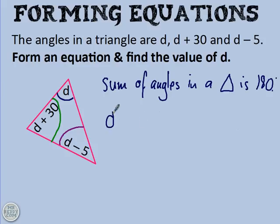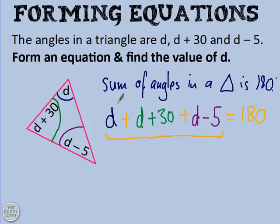So if I add the angles together, is that what you're saying? The first angle, D. Add the green angle, which was D add 30. Add the purple angle, which was D take away 5. Are we saying that that equals 180? I think we are. Because this is the three angles added together. In other words, that's the sum of the angles in the triangle. And we're saying that it's 180. Brilliant! Well, we're so much closer to getting an equation that we can solve.